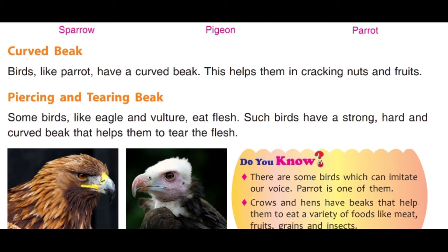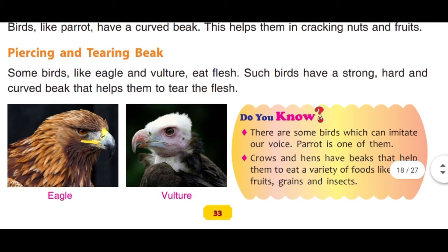Do you know there are some birds which can imitate our voice? Parrot is one of them. Crows and hens have beaks that help them to eat a variety of food — like meat, fruits, grains, and insects. Crow and hen ke beak aise hote hain jo unhe prakar prakar ke food ko khane mein madad karte hain, jaise meat, fruits, grains, aur insects.